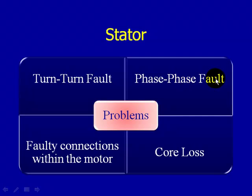What are some of the problems in the stator fault zone that can occur? You can have turn-to-turn fault, phase-to-phase fault, faulty connections within the motor, and core loss. Keeping in mind the six fault zone approach — when we look at the power circuit, we're trying to make sure the whole power circuit is evenly balanced. Any type of unbalance could create excess heat in the circuit, and that excess heat could destroy insulation, potentially causing a turn-to-turn fault or phase-to-phase fault as that insulation breaks down.